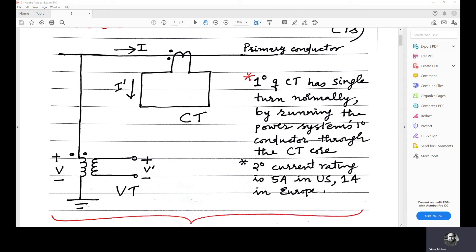Now, regarding the burden, the CT does not depend on the secondary burden. But for a PT, it depends on the secondary burden. Secondary burden in the sense the sensing device impedance. It can be a relay, which we have already seen.